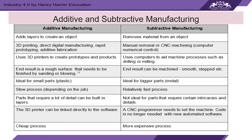In additive manufacturing, layers are added to build an object. In subtractive manufacturing, material is removed from a block. Subtractive manufacturing requires manual removal or CNC machining — computer numerical control — which uses computers to aid machines in processes such as drilling. The end result can be machined smooth or stepped. It is better suited for bigger parts since removing material is a relatively faster process, but not ideal for parts that require fine intricacies and details. It is also a more expensive process overall.